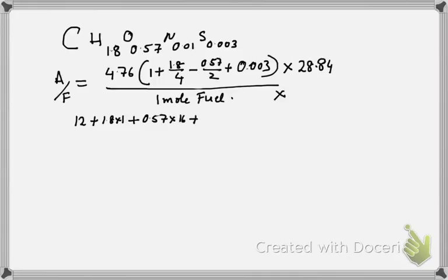Plus there is 0.01 nitrogen, times 14. All right? And then plus 0.003 times 32. So this will give us the molecular weight of fuel. So that happens to be, in this case, 22.56 roughly.